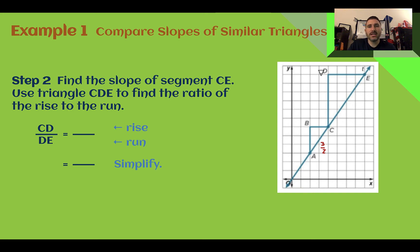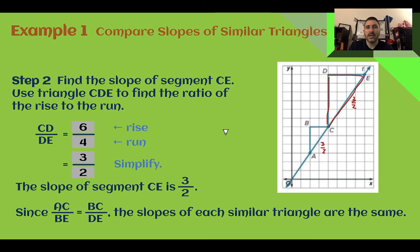Now let's find the slope for segment CE. So CE is right here. Here, we're going to use the triangle with CDE to find that ratio. This one went up six and over four. If we were to simplify that, six over four simplifies to three over two. And again, we find that that triangle had the same slope of three over two. And since we know that the ratios of the sides of these triangles are similar, as that's our definition for similar triangles, we can say that the slopes of these triangles are also the same.